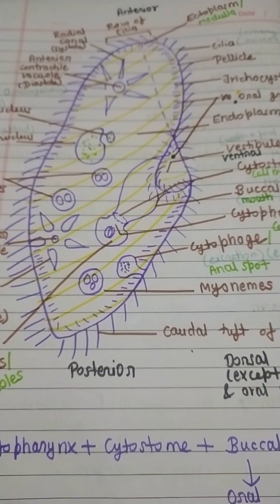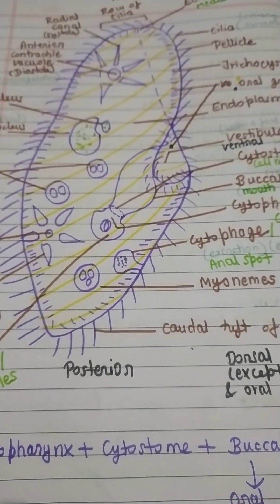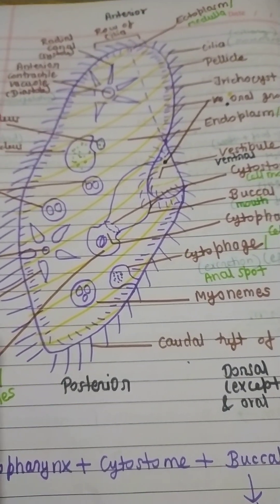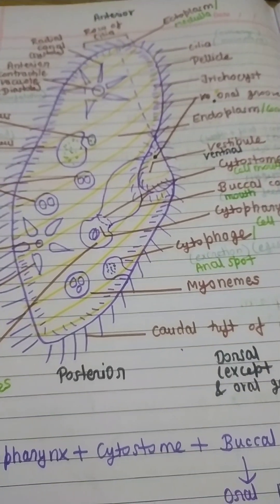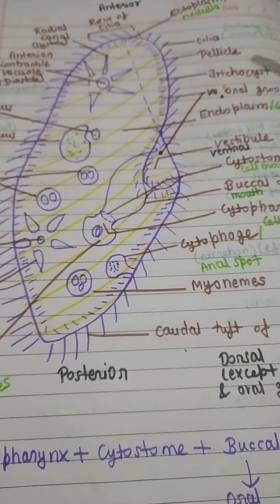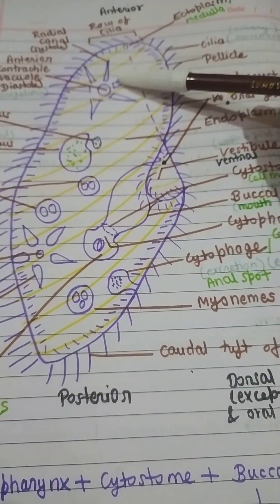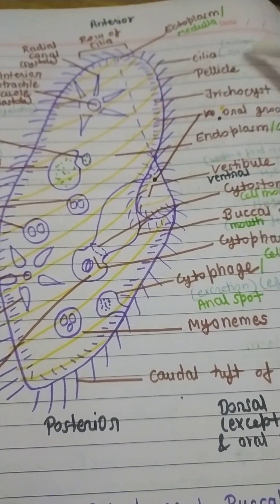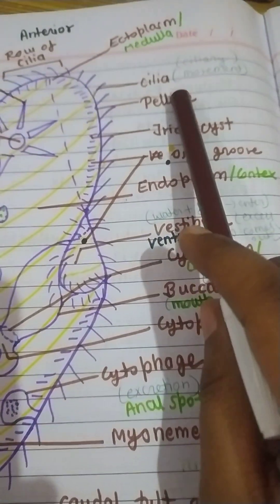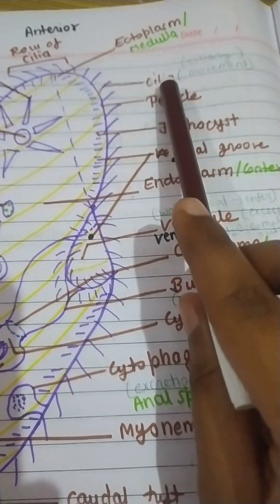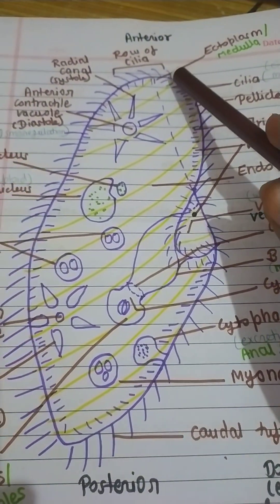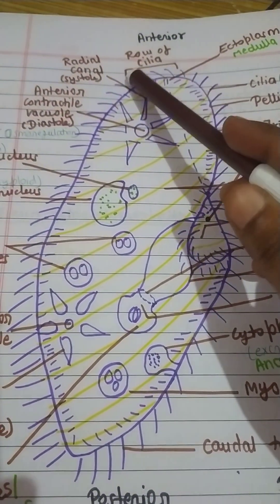Hi everyone, welcome to Study Wagon. Today I am going to tell you some functions of the body parts of the paramecium. So let's start from cilia. Cilia is also known as cilium, and it is present on the whole outer surface of the body.